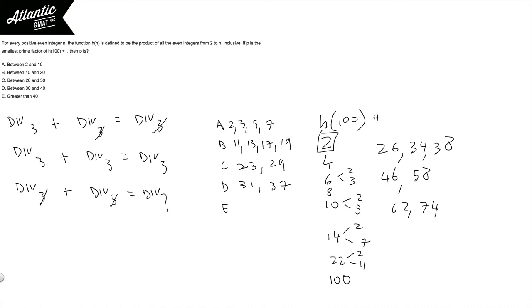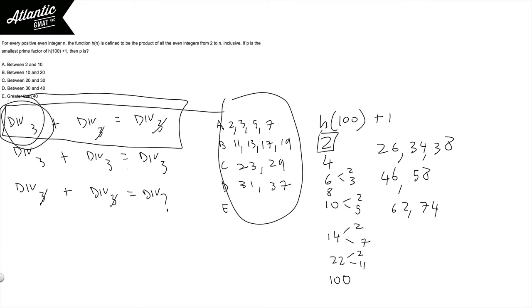But we're adding 1 to that. And so again, we can use this divisibility rule that if you're divisible by something. So we know that h of 100 is divisible by all of these things. So that would be like it's definitely divisible by something.